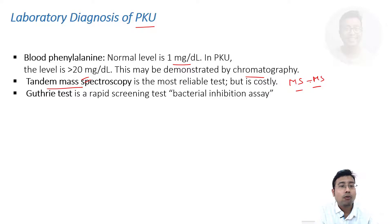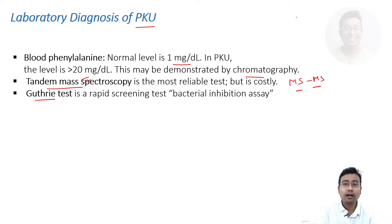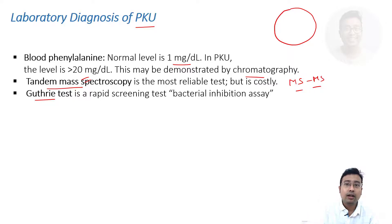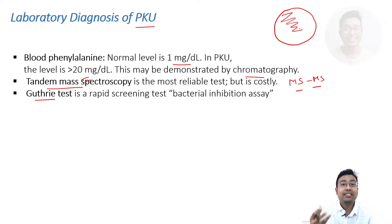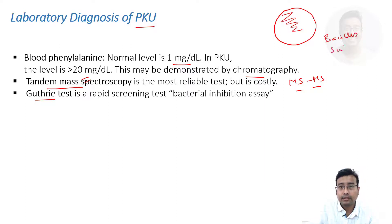You should know one historical method: Guthrie's test, which is a bacterial inhibition assay. To understand it, you need to know how microbiological growth occurs. Normally, bacteria are grown in a culture media where essential nutrients are provided and colonies form over time. The bacteria used in Guthrie's test is Bacillus subtilis — pronounced 'subtilis' with a silent B.